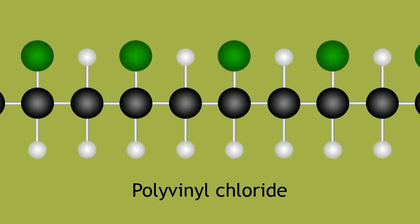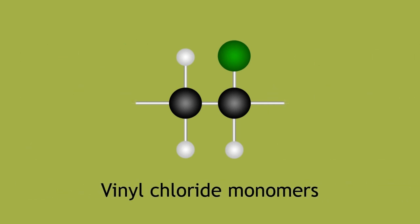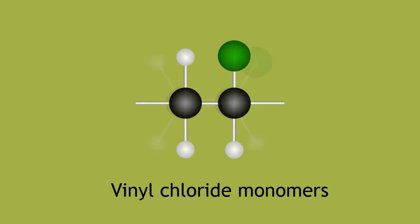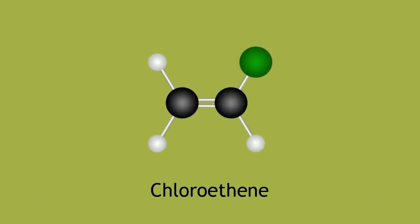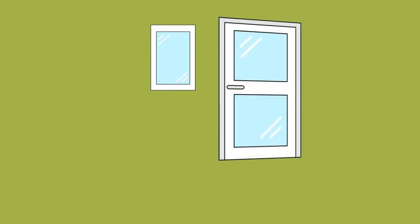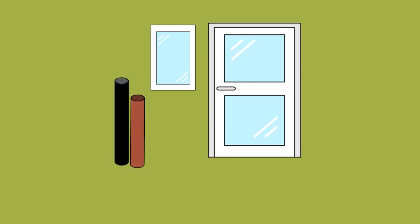Similarly, polyvinyl chloride, or PVC, is a polymer of vinyl chloride monomers. Vinyl chloride is simply the common name for chloroethene. As you may have learned in a previous lesson, PVC can be used to make window and door frames, plastic hinges, and pipes. All of the listed materials are hard and rigid, and serve to provide structural support.